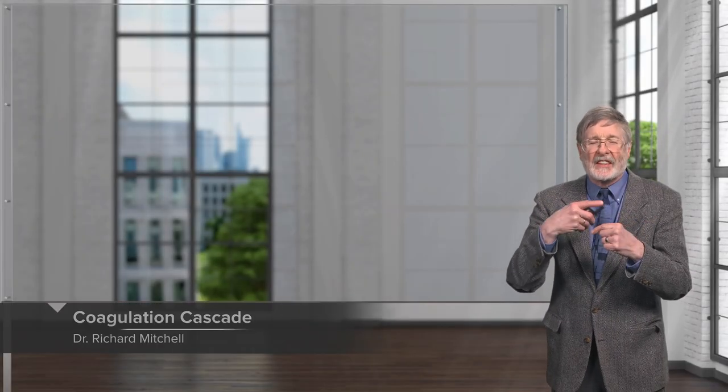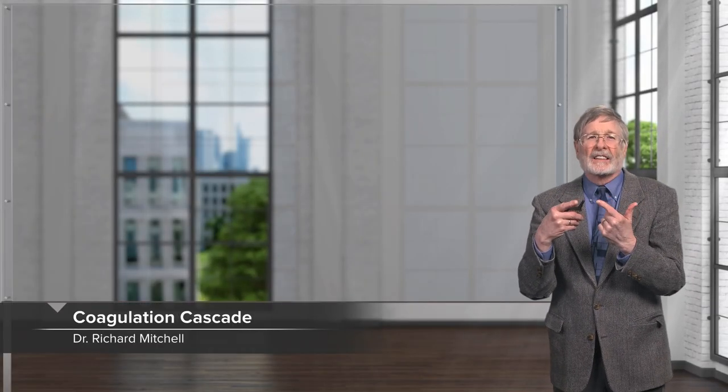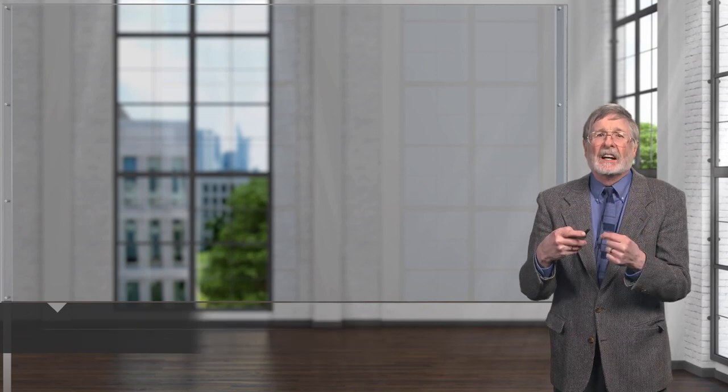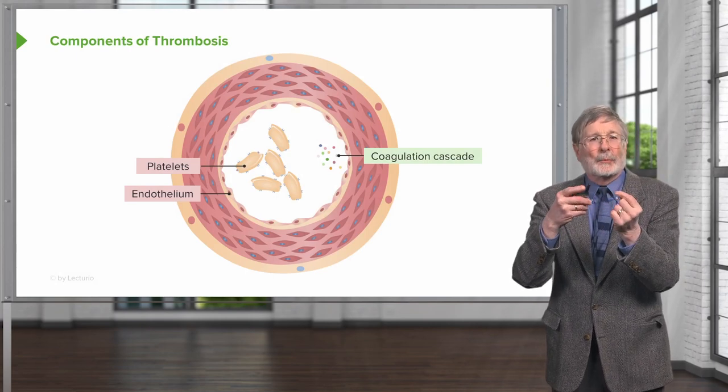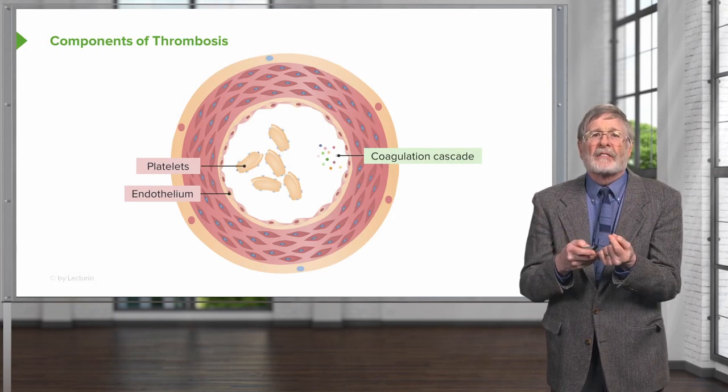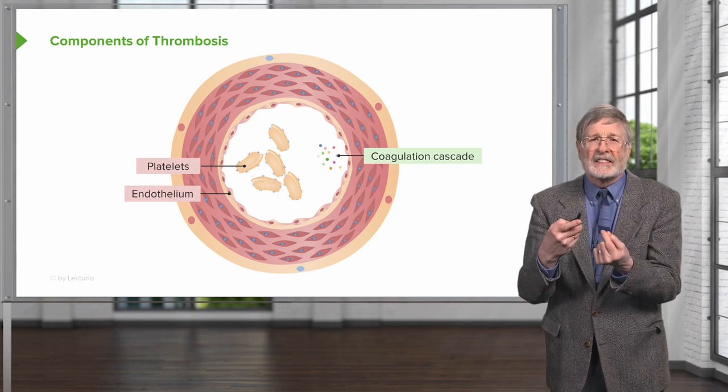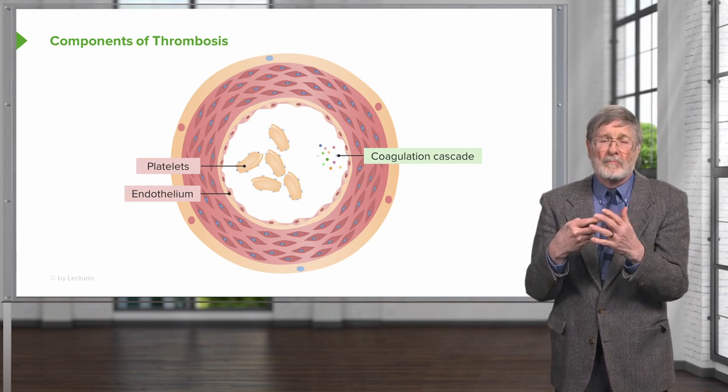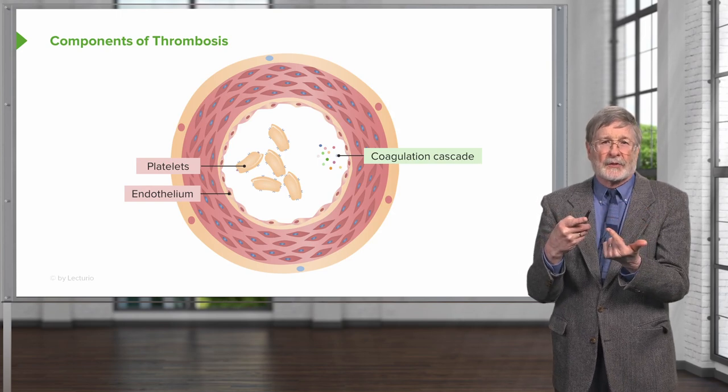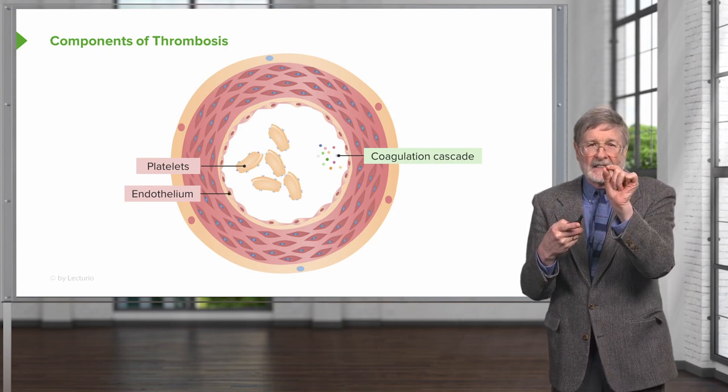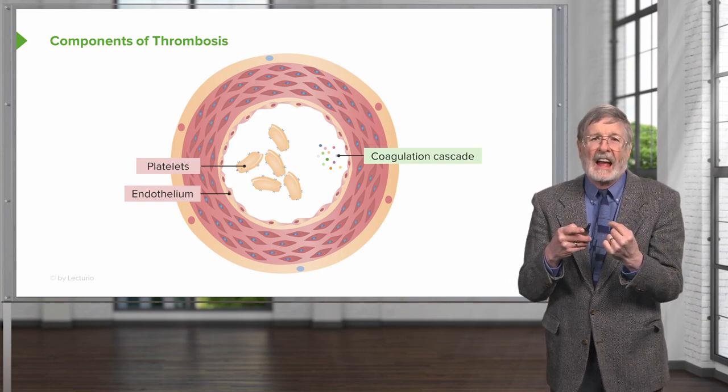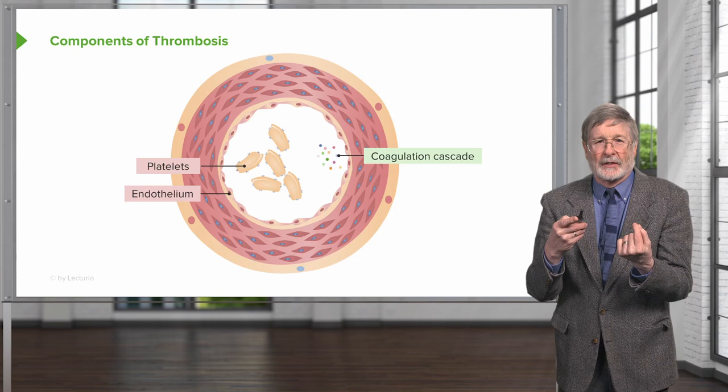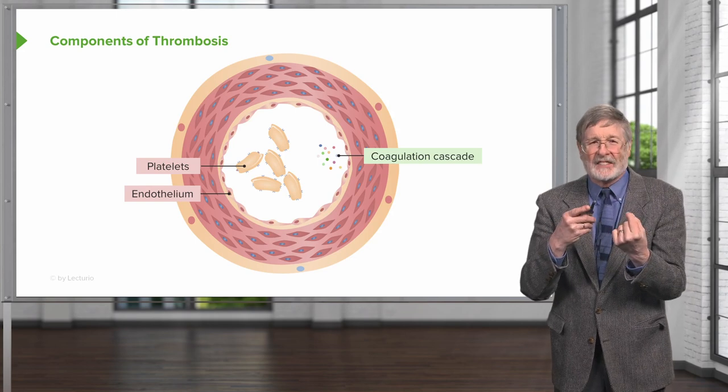Welcome to the next session on the coagulation process and thrombus formation. We've talked previously about platelets. Today we're going to emphasize the proteins that are synthesized elsewhere, mainly in the liver, and that are circulating within the bloodstream. They're indicated as little tiny multicolored dots there in the coagulation cascade, and there are lots of factors. All those different colors represent a different factor.